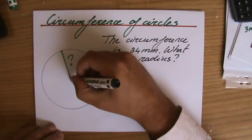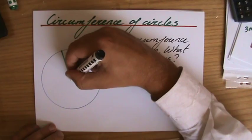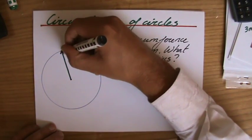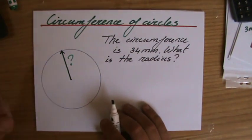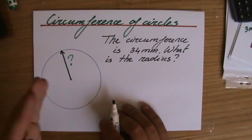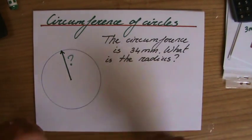I get a little bit nervous now because every time they've given me the radius I had to find the circumference, but now all of a sudden they give me the circumference and I have to find the radius.